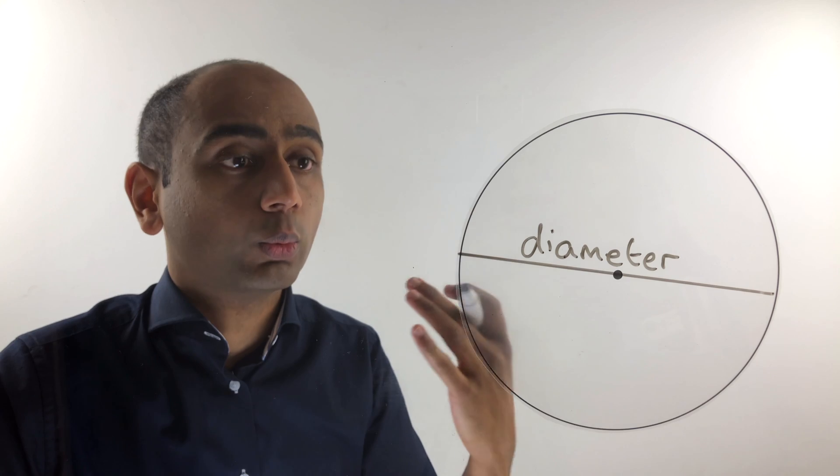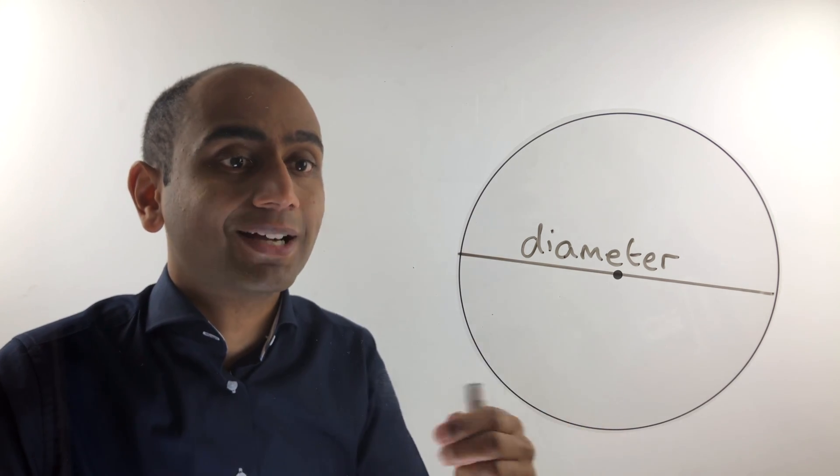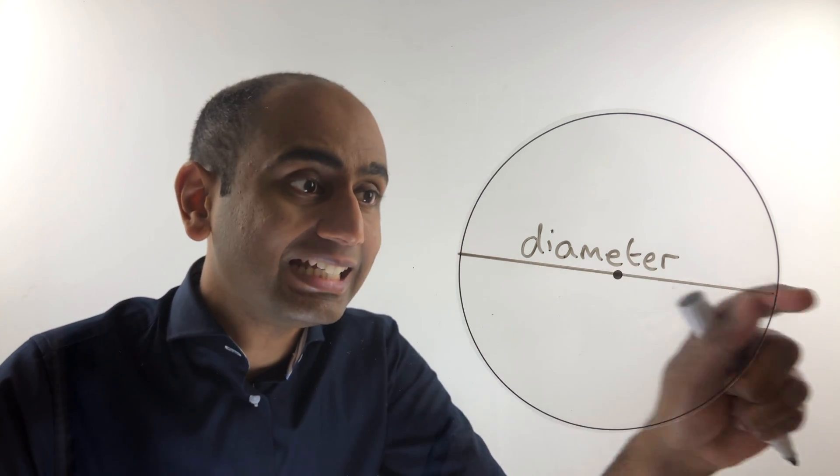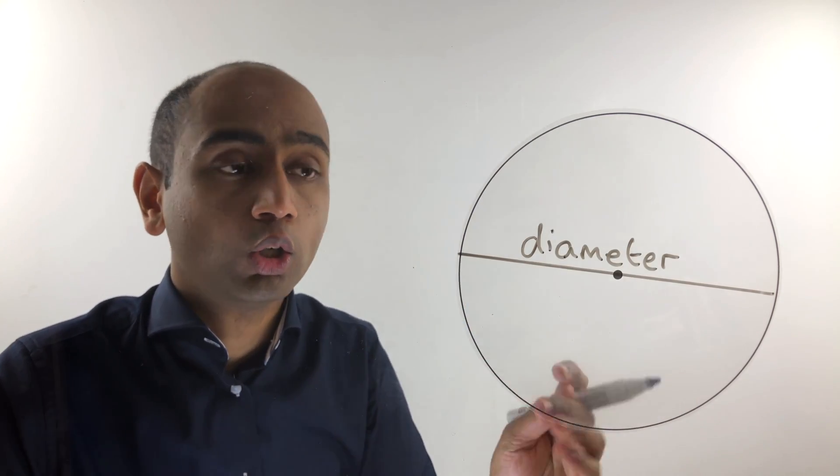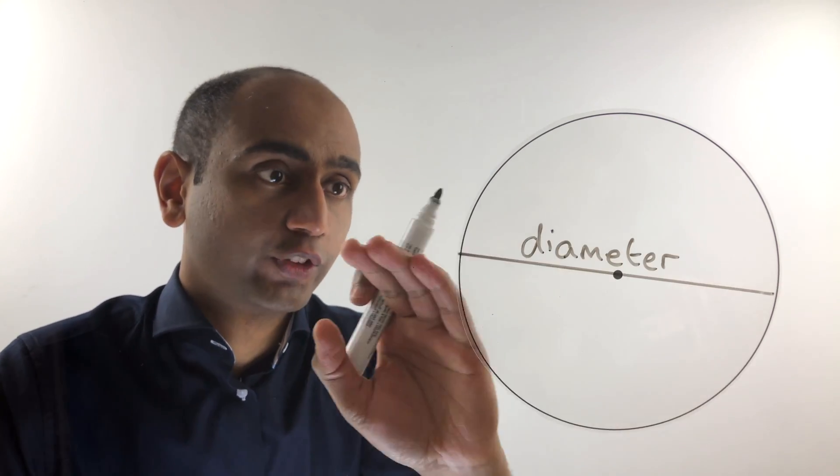And just like with the radius, when we talk about diameter, we might be talking about a diameter—so that's any such line in any direction—or we could be talking about the length of that line.